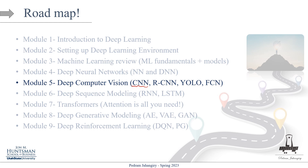For example, we'll look into object detection, semantic segmentation, and image captioning. We'll cover regional-based CNNs, Fast R-CNN, and Faster R-CNN. We'll also talk about the YOLO — you only look once — algorithm. And finally, for semantic segmentation, we're going to look into fully convolutional networks. It's going to be an exciting module, so let's get into that.